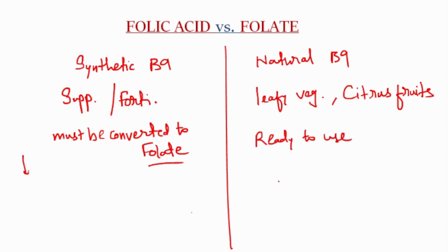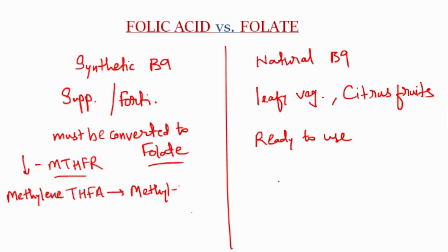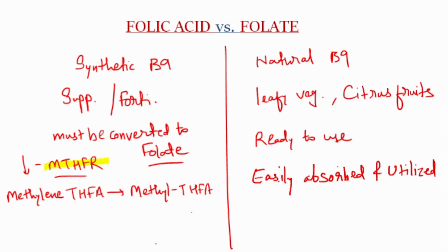Folic acid can be less effective for people with a genetic variation in the methylene tetrahydrofolate reductase gene, because methylene tetrahydrofolic acid converts into methyl tetrahydrofolic acid — the more active form — by the enzyme methylene tetrahydrofolate reductase. Folate, however, is easily absorbed and utilized by the body. If you have a genetic variation, consider methylfolate or folate supplements. If you prefer a more natural approach, choose whole foods rich in folate. If you are already taking supplements, ensure they contain folate or methylfolate instead of folic acid.